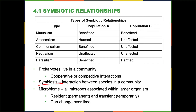In commensalism, one microbe benefits and the other is unaffected. Many of our microbes that live on us are commensal — they hang out, do their thing, gain protection from us, especially if they're inside us. We don't necessarily benefit from them being there. They gain a warm, nice environment with access to food sources present inside. They're kind of important to us, but in general, there's nothing specific they do that helps us out.